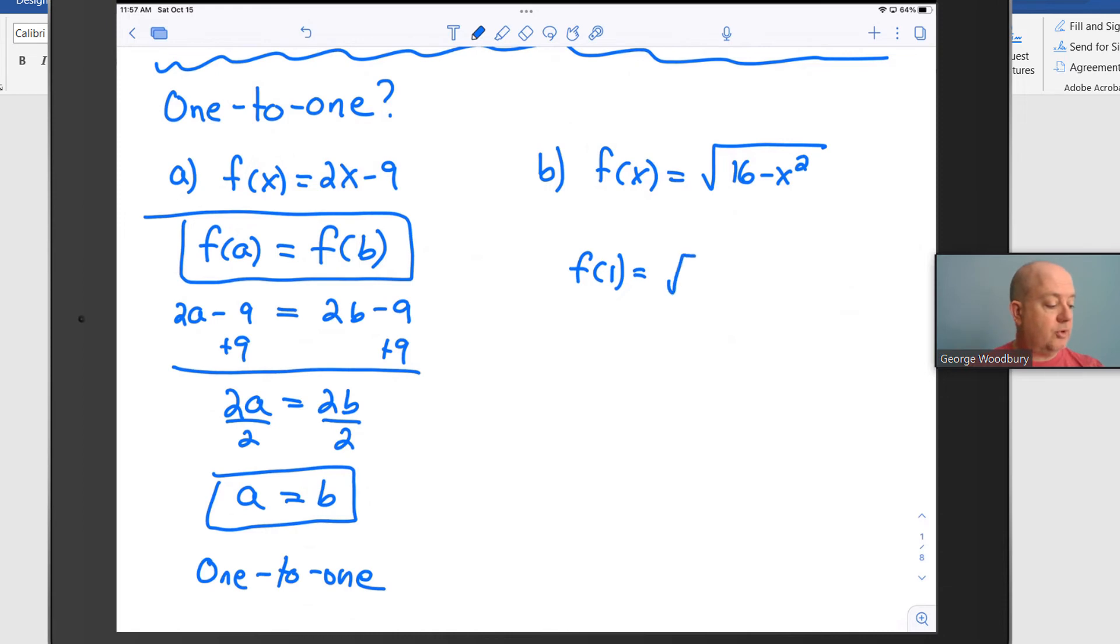suppose we started with f(1). f(1) would equal the square root of 16 minus 1 squared. 1 squared is just 1. 16 minus 1 is 15, so f(1) equals the square root of 15. Notice that we could get the same thing if we worked with f(-1). This would be the square root of 16 minus negative 1 squared. Negative 1 squared is positive 1, so we've got 16 minus 1. That is also the square root of 15. So we have two different x values.